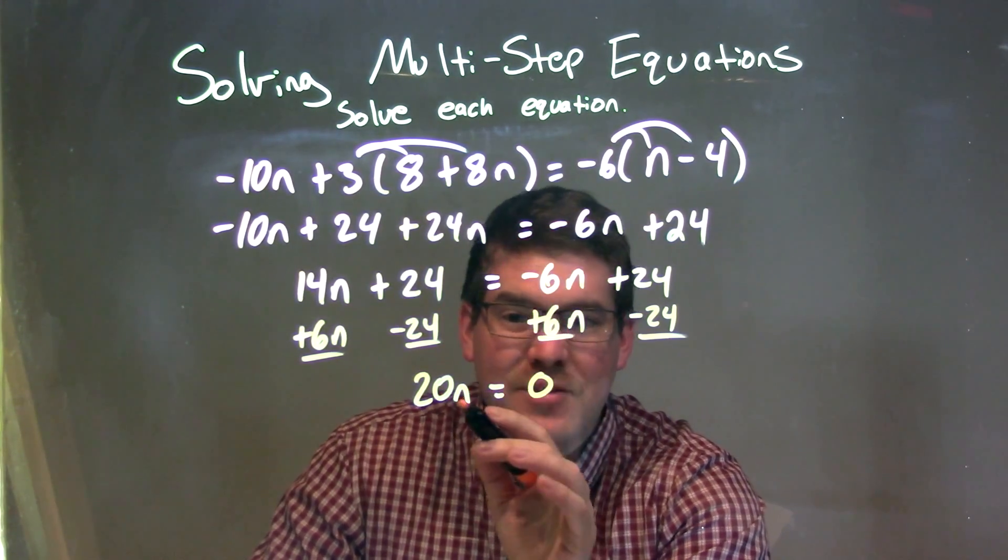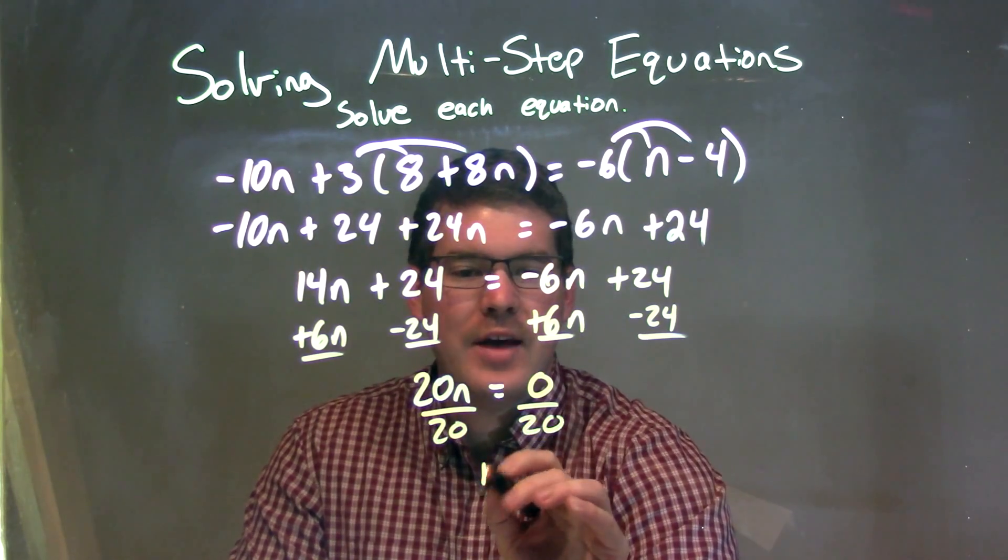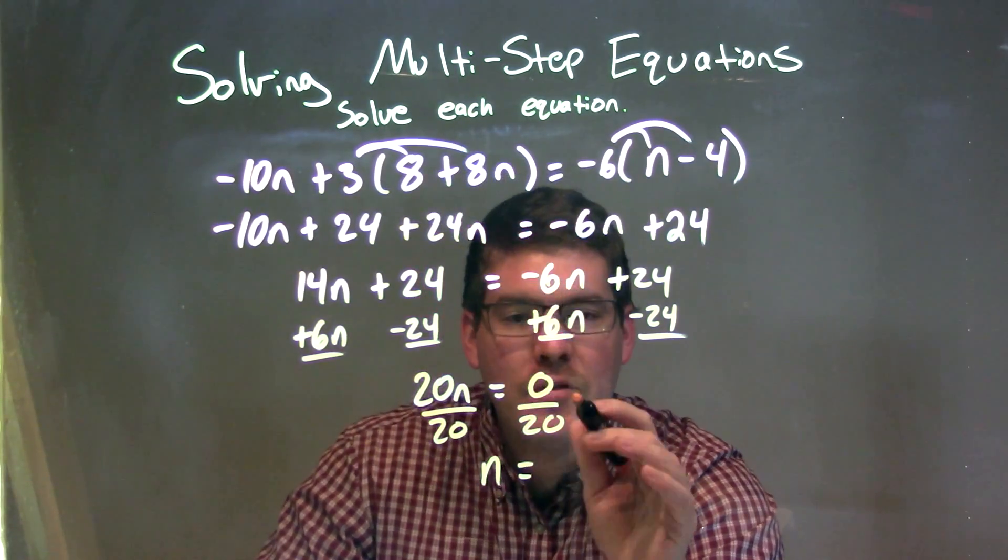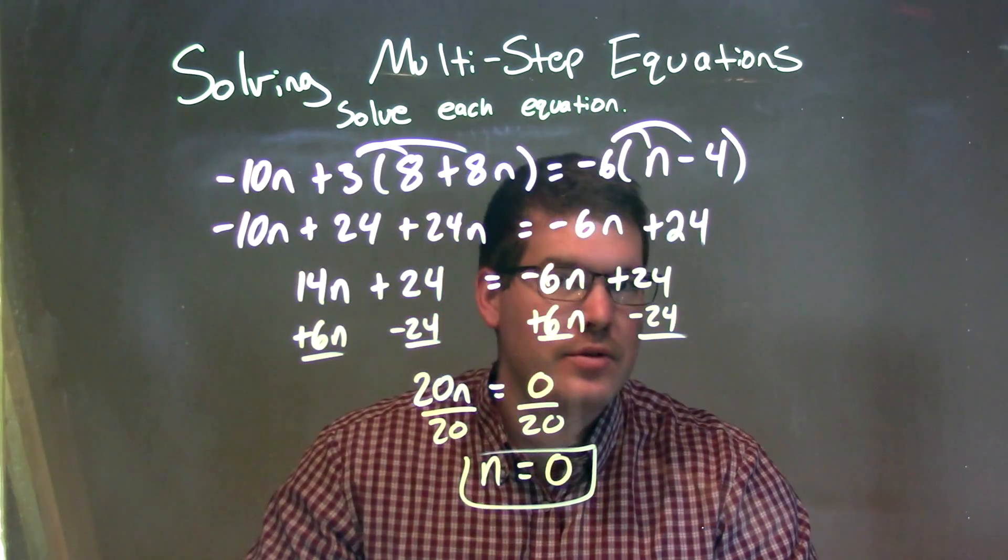So now, from there, that's what's kind of left here. We need to divide by 20 on both sides. That leaves us n by itself here, n by itself, and 0 divided by 20 is 0. So our final answer here is just n = 0.